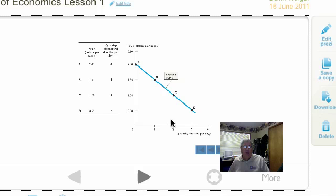As price goes up, quantity demanded goes down. As price goes down, quantity demanded goes up.